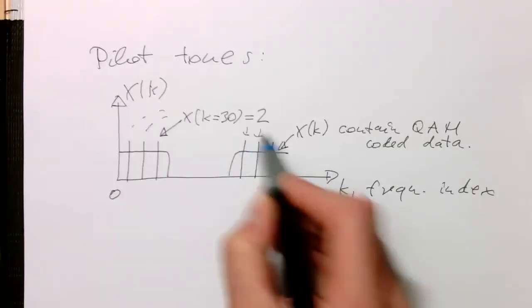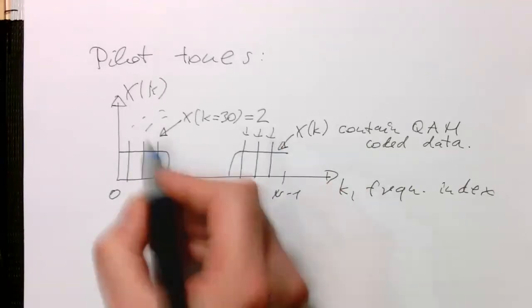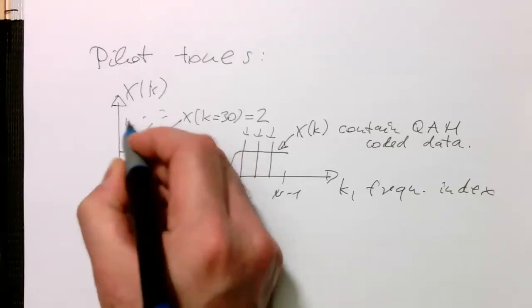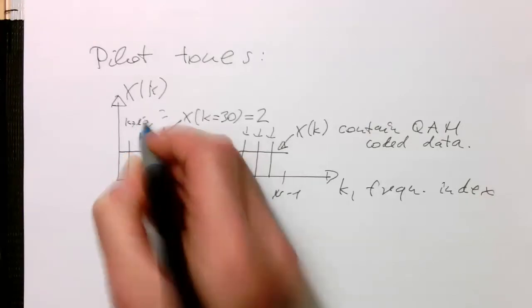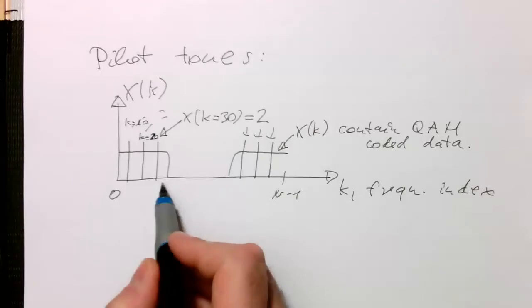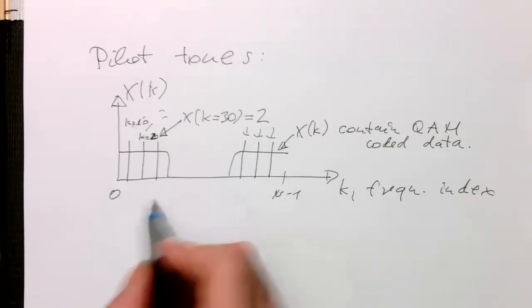These are other k's, so let's say maybe k20, k10 or something like that. So that's k10, and let's say this is here k20, and that's here k10 for example. So we're setting these ones to constant values. And these are the so-called pilot tones.